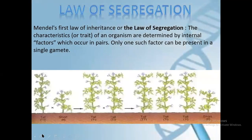First law of Mendel — law of segregation. Mendel's first law of inheritance is known as the law of segregation. The characteristics or traits of an organism are determined by internal factors which occur in pairs. Only one such factor can be present in a single gamete. If a cross is made between a tall plant and a short plant, then in the first generation only the dominant character — tallness — is visible.